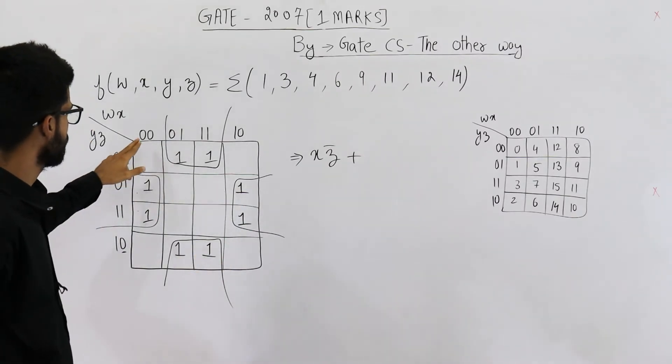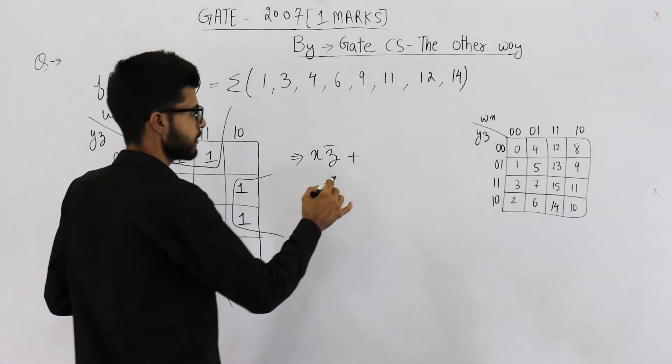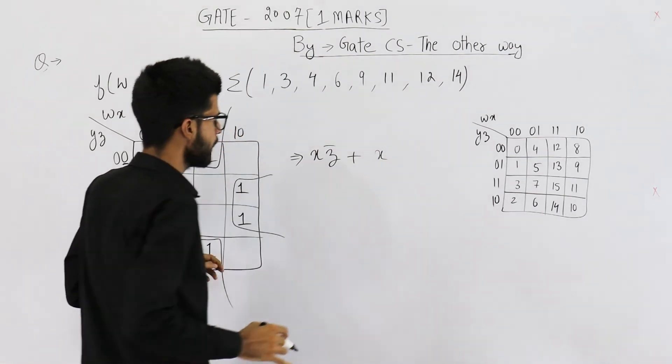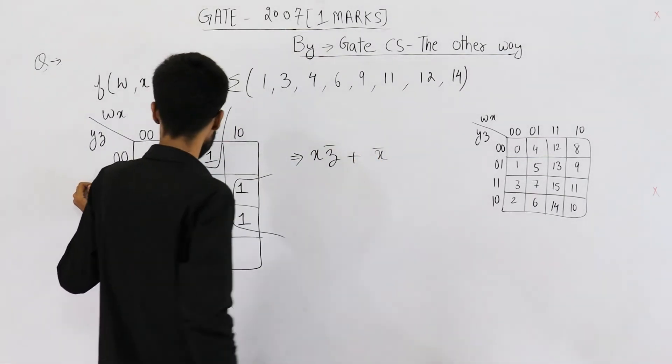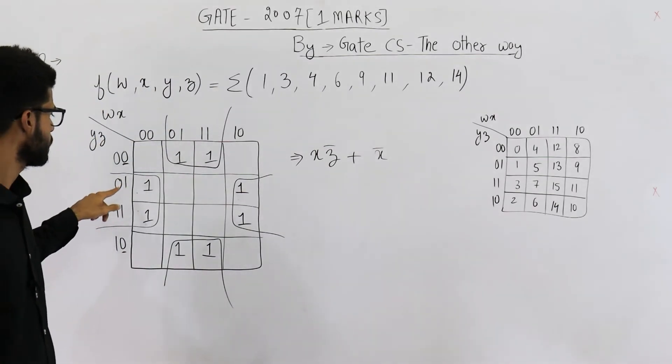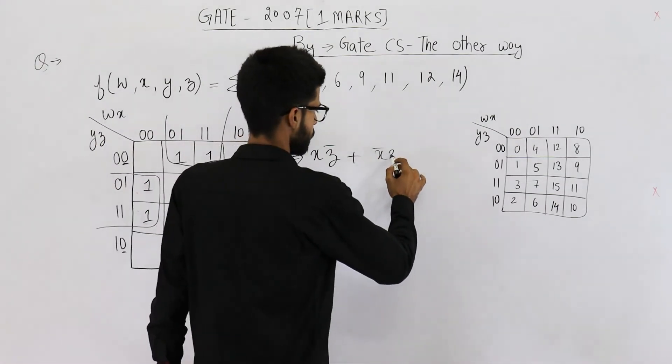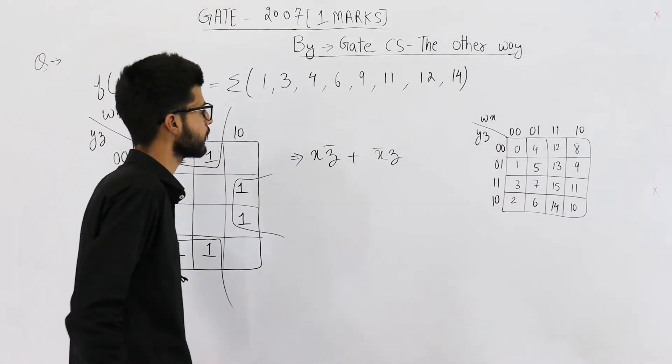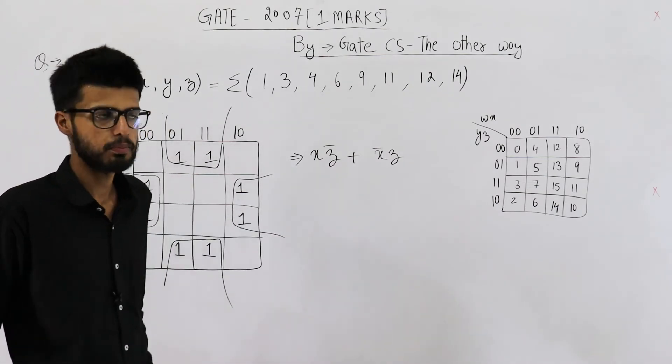You can see value of X is same for all of them. That's the reason we will have X. And also this value is zero, that means bar. And the value of Z is one for all of these four cells. So we'll have Z. So we got X Z̄ plus X̄ Z.